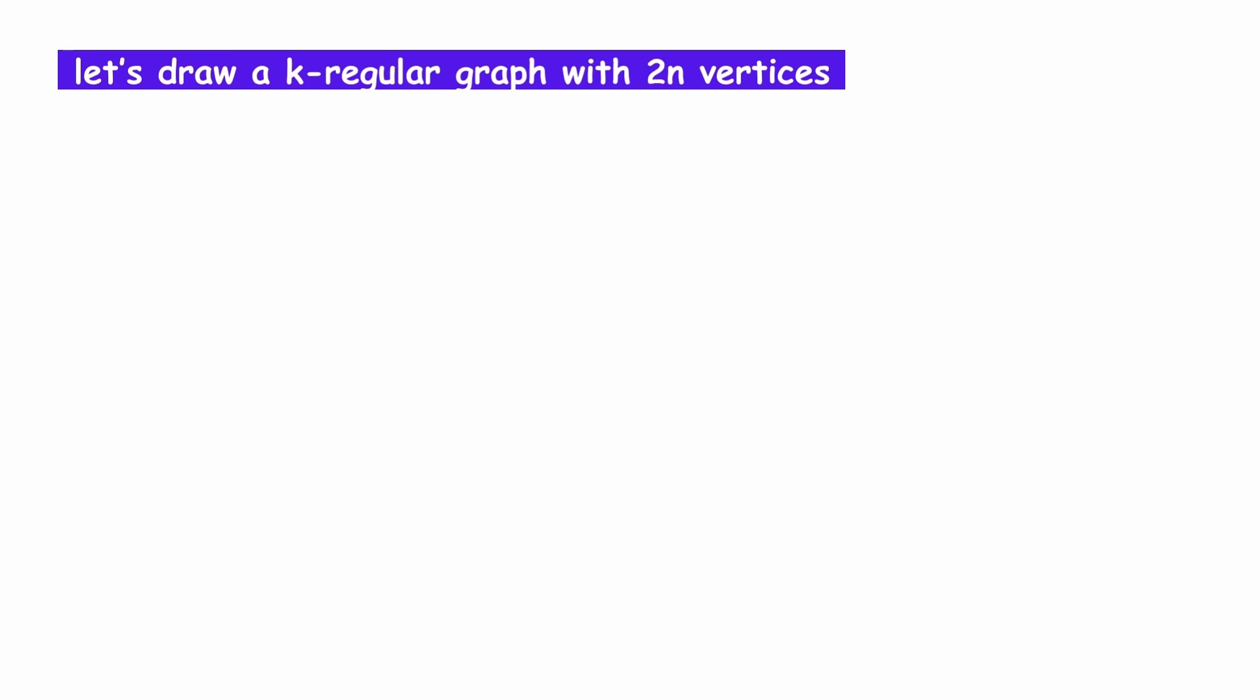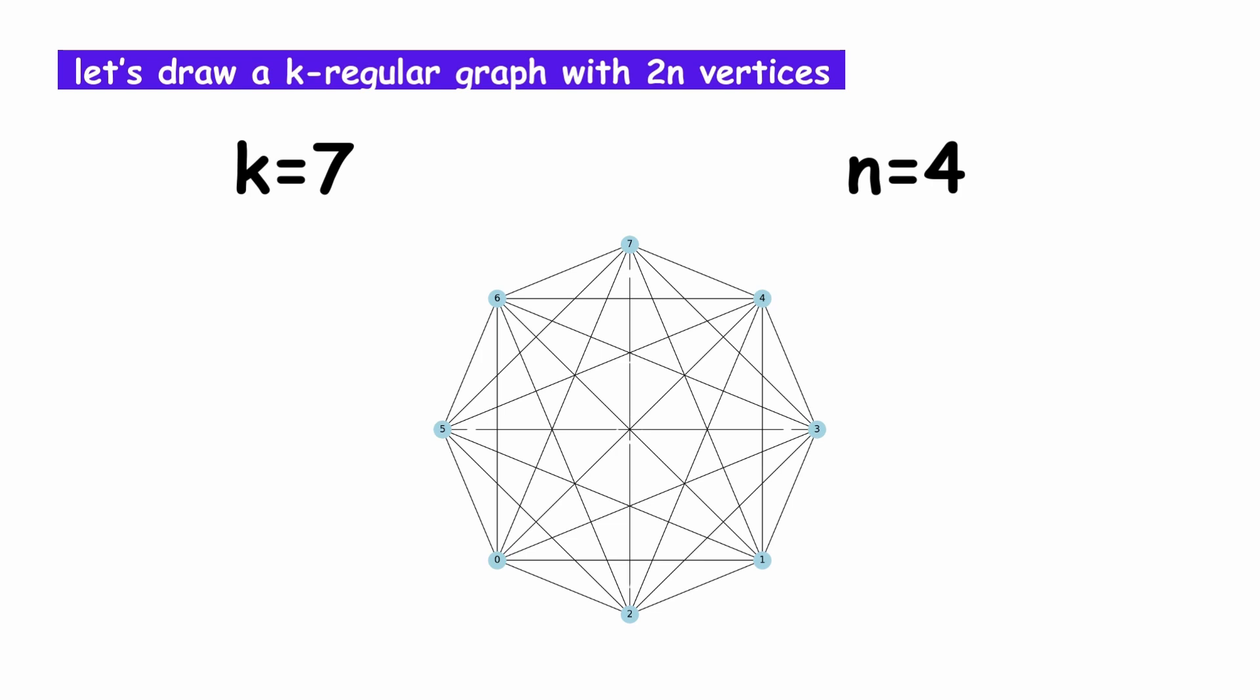For instance, k equals 7 and n equals 4 gives us a 7-regular 8-vertex graph.